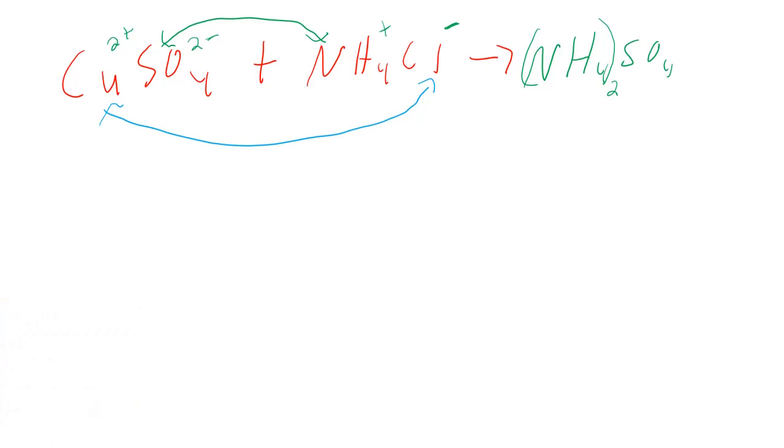And then for the copper chloride I have CuCl. But I also have to realize that copper has a two positive charge and chlorine has a negative charge, which means I need two chlorines to balance that two positive on the copper.